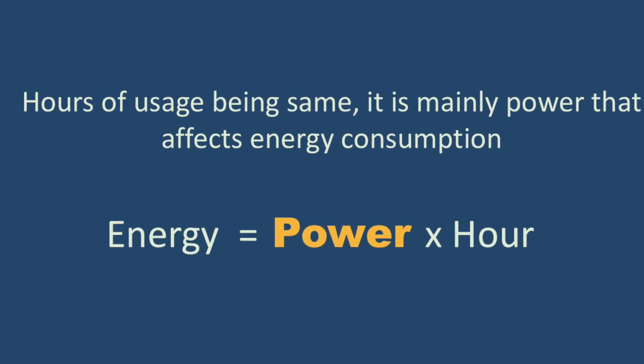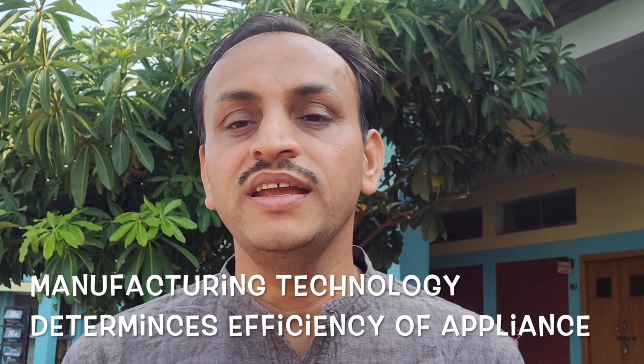The other parameter for finding out how much energy an appliance consumes is the power rating. How much power an appliance requires depends on its technology — whether it is AC or DC technology, and how efficient it is. Depending on how advanced the technology is, the power rating can vary for the same job output. If there is a higher power rating, the appliance is going to consume more energy, because energy is power multiplied by hours.